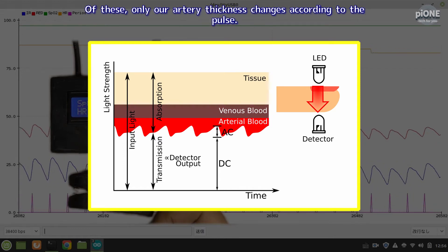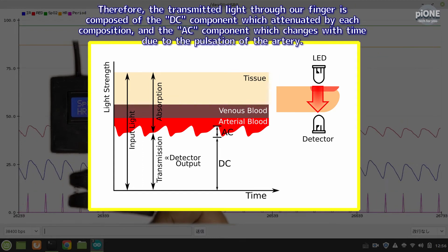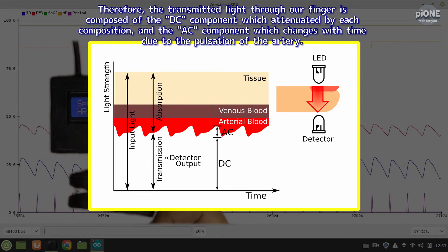Of these, only our artery thickness changes according to the pulse. Therefore, the transmitted light through our finger is composed of the DC component which is attenuated by each composition, and the AC component which changes with time due to the pulsation of the artery.